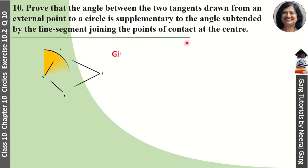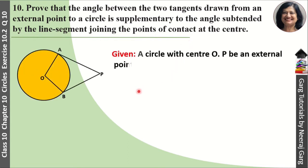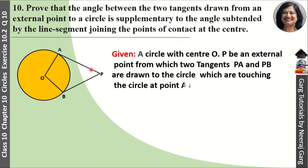For this, we have drawn a diagram with a circle with center O. P is an external point from which two tangents PA and PB are drawn to the circle which touch the circle at A and B respectively.